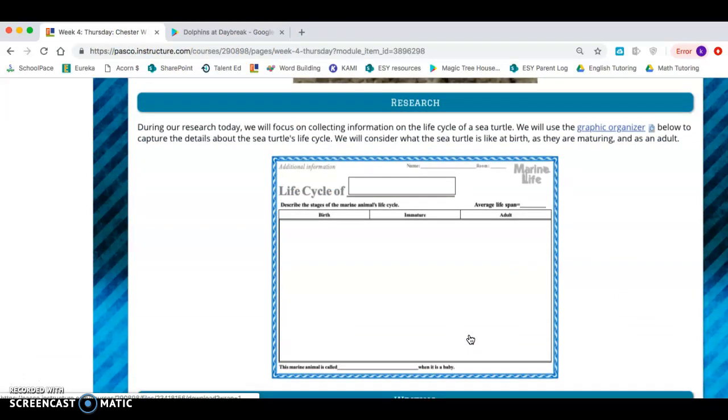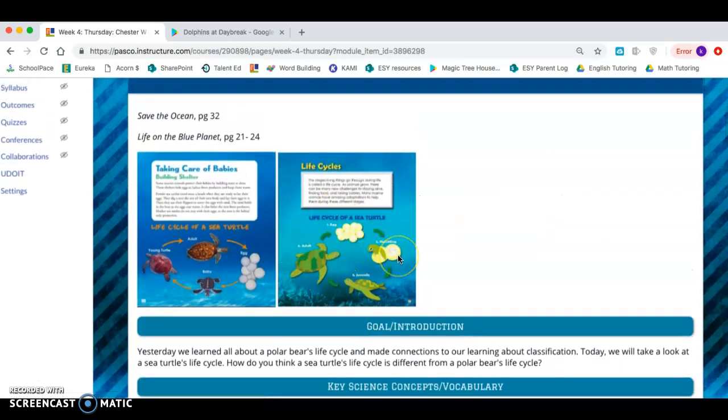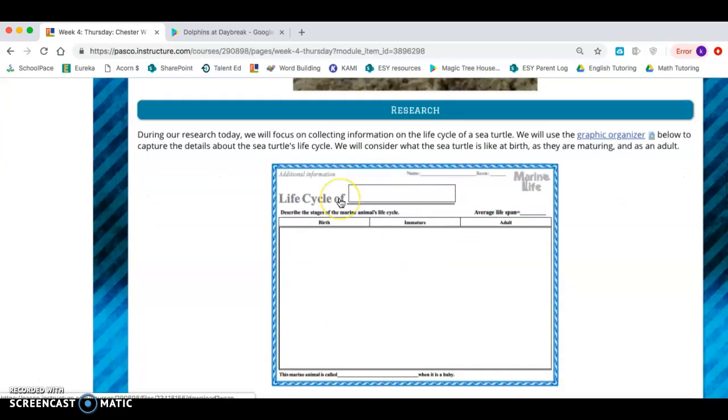All right, so now you're going to go ahead and finish your life cycle about your animal. You can go and look at the example of the sea turtle. But go ahead and finish your life cycle of your animal that we started yesterday. So you're going to draw a picture and label what your animal looks like at birth, immature meaning like growing up, a kid, and an adult. Also fill in your average life span. If you don't finish this we can finish this on Monday in a small group. So go ahead and pause the video and work on your life cycle that we started yesterday.